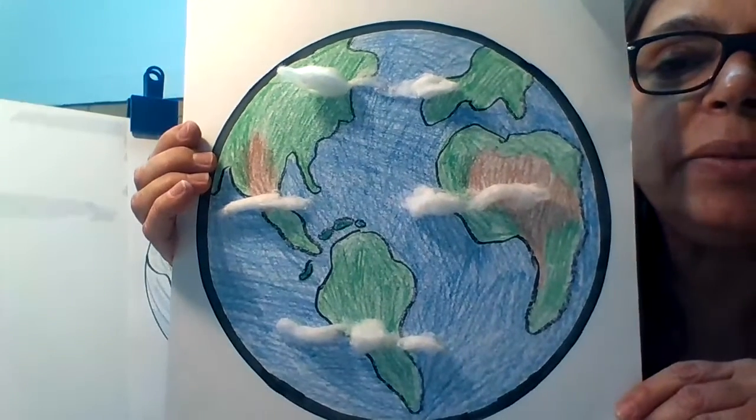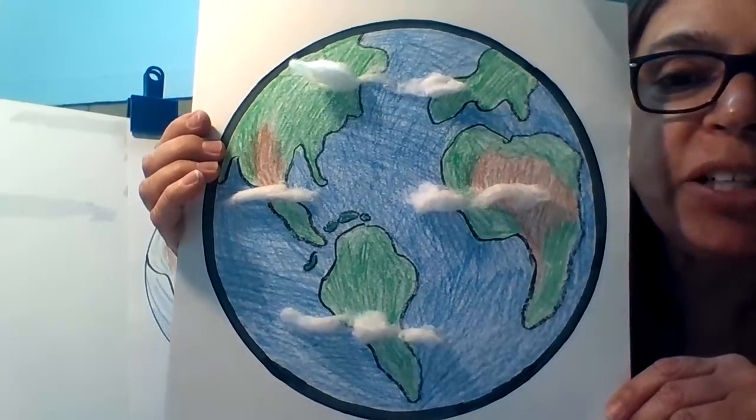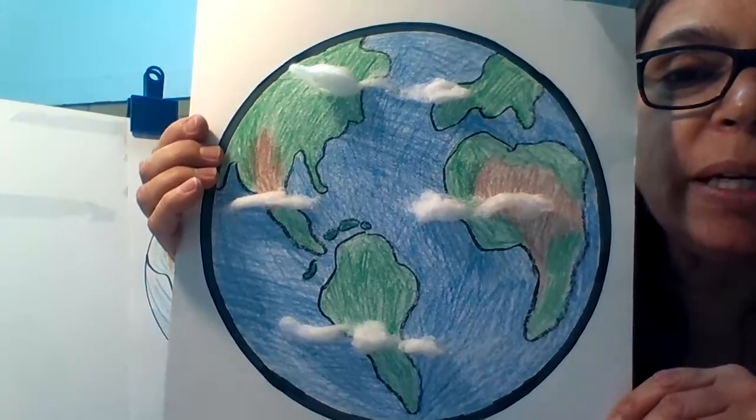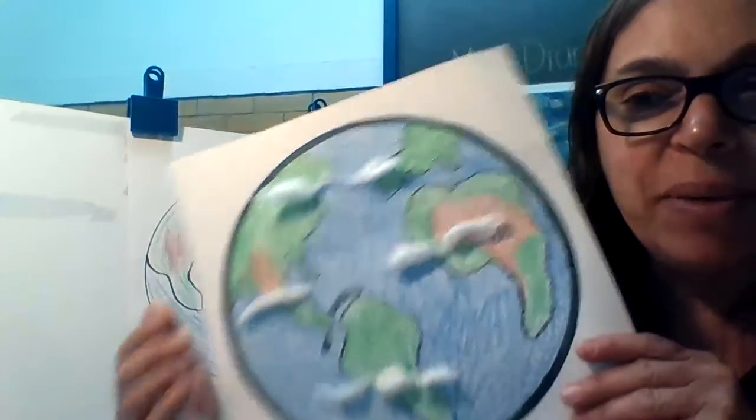Today we are making a picture of the earth for Earth Day. You start with a circle. You add the land. You color the land in green or brown. Then you color the water, and then you can add the clouds. I can't wait to see your pictures. Have fun, everybody.